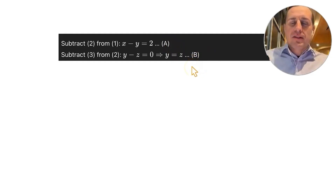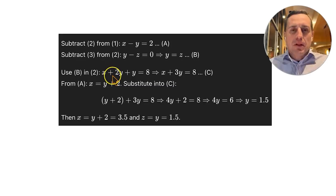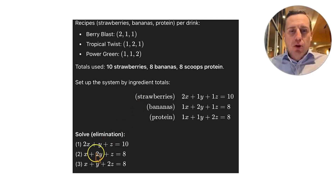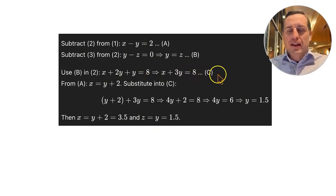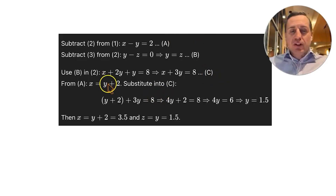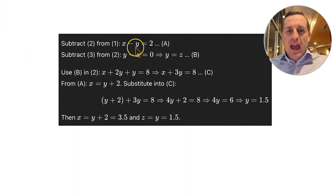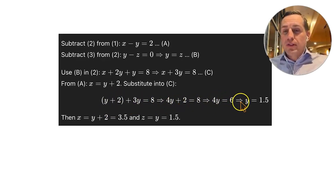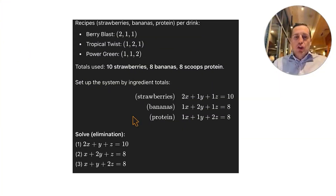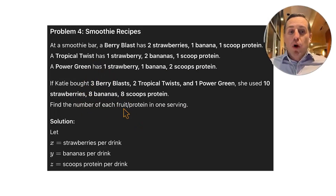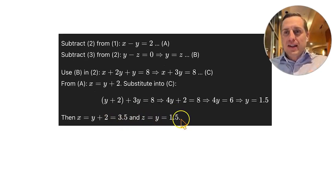Since Z equals Y, substitute into equation 2: X plus 2Y plus Y equals 8, giving X plus 3Y equals 8 (equation C). From equation A, X equals Y plus 2. Substituting into equation C: Y plus 2 plus 3Y equals 8, so 4Y equals 6, giving Y equals 1.5. Therefore Z equals 1.5 and X equals Y plus 2 equals 3.5. The number of fruit and protein in one serving is X equals 3.5, Y equals 1.5, Z equals 1.5.